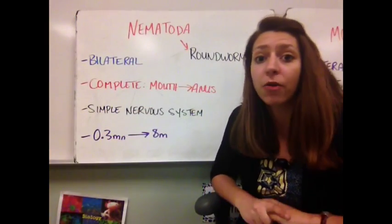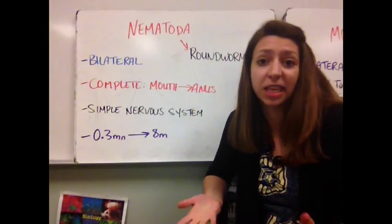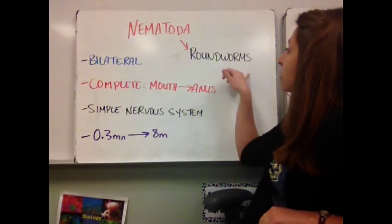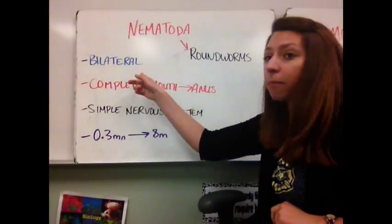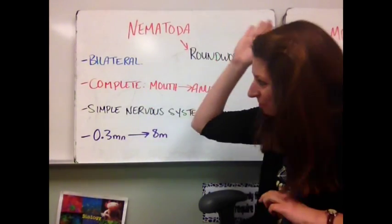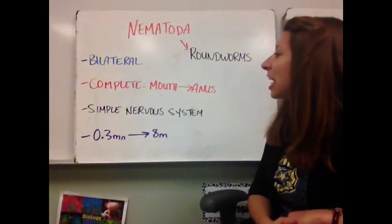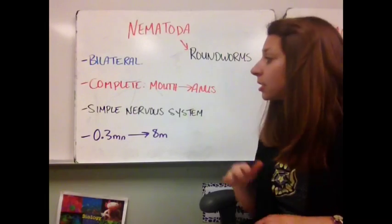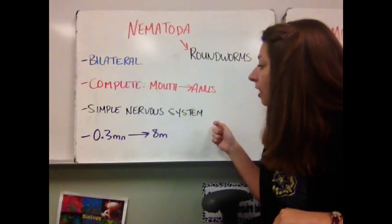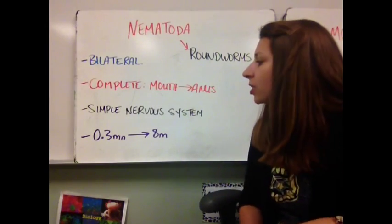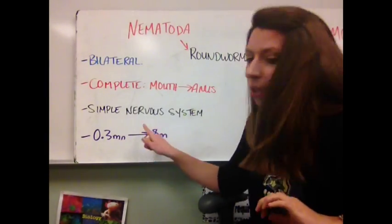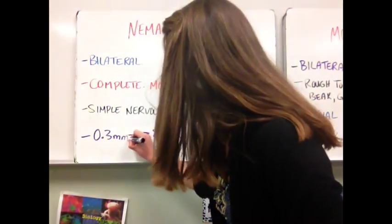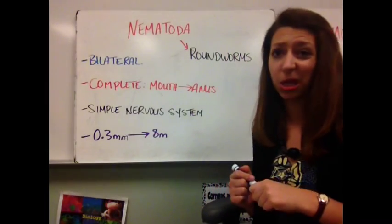Let's talk about Nematoda. Remember, several of our examples were invertebrate parasites. They include all of the roundworms. These guys have bilateral symmetry. They have complete digestion — it goes all the way from the mouth to the anus, which is a first in evolutionary history. They have a very simple nervous system, and they can range in size from about 0.3 millimeters to 8 meters, so they can get really long and big.